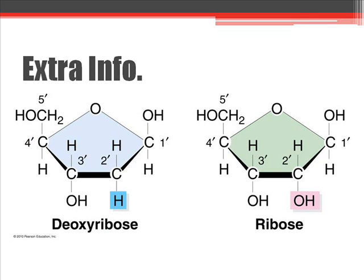This next part isn't on the test — it's a little more complicated than you need to know for biology class. But sometimes students like to see the difference between deoxyribose and ribose, the sugars in DNA and RNA. The difference between the two is just one little atom: you've got hydrogen by itself on deoxyribose, and you've got an OH group on the ribose. That small difference is enough to make the function of these two molecules completely different from each other.